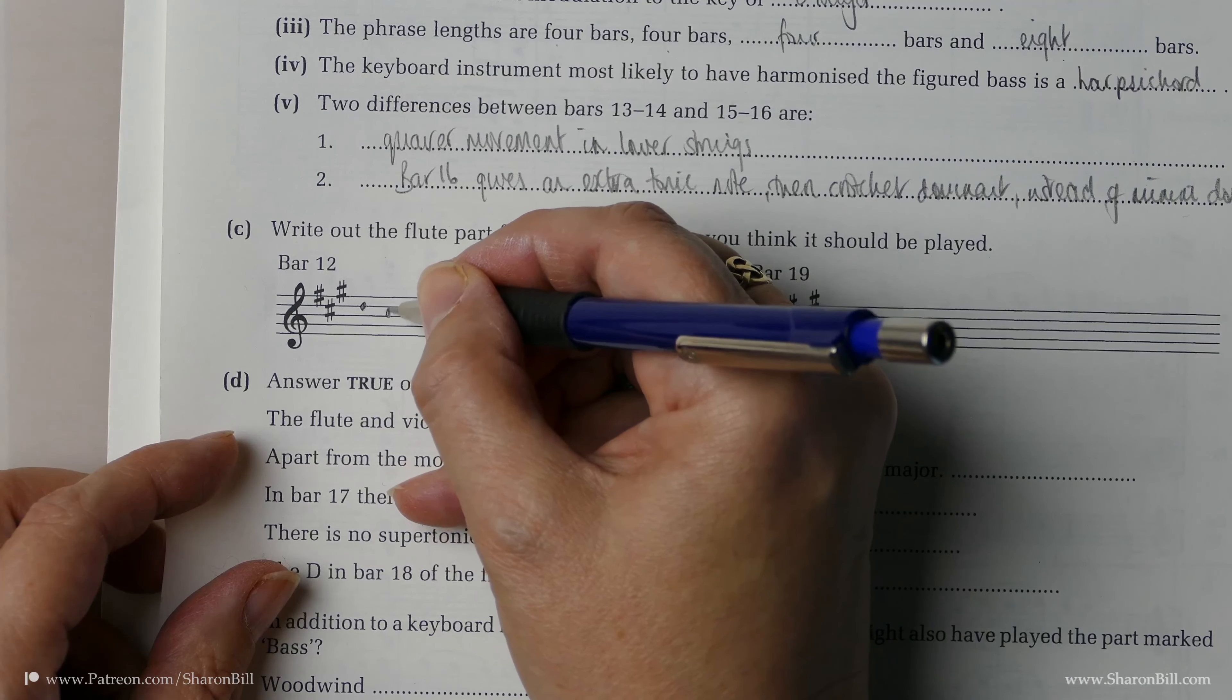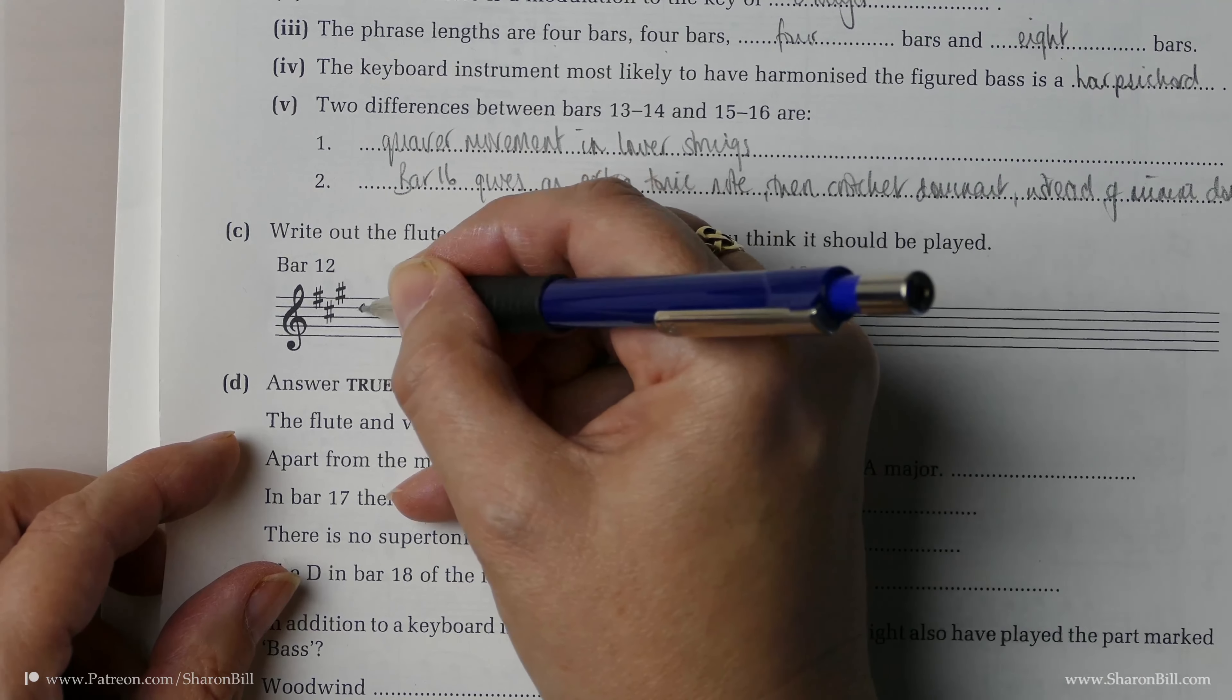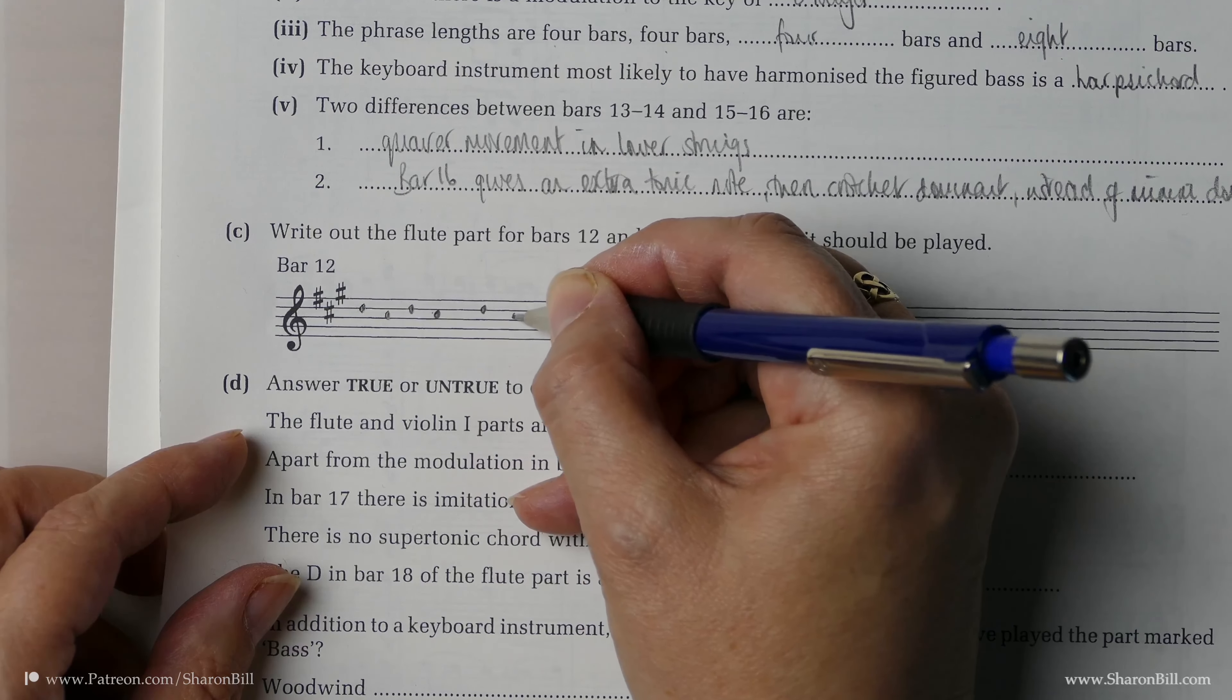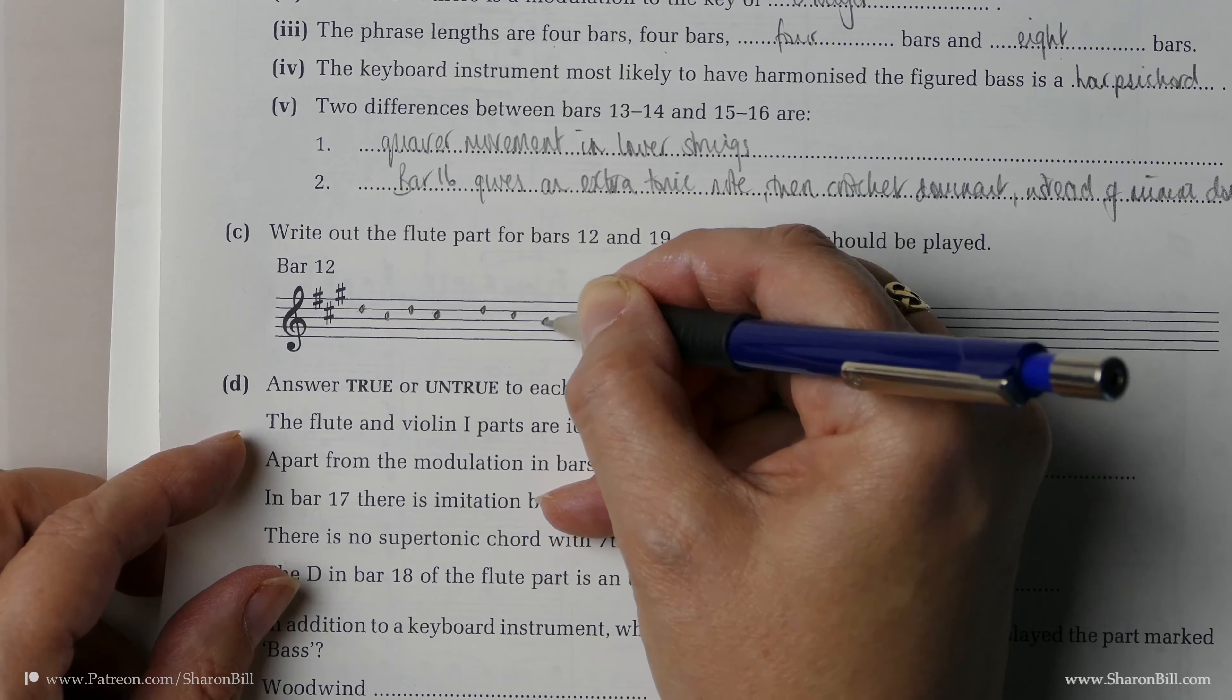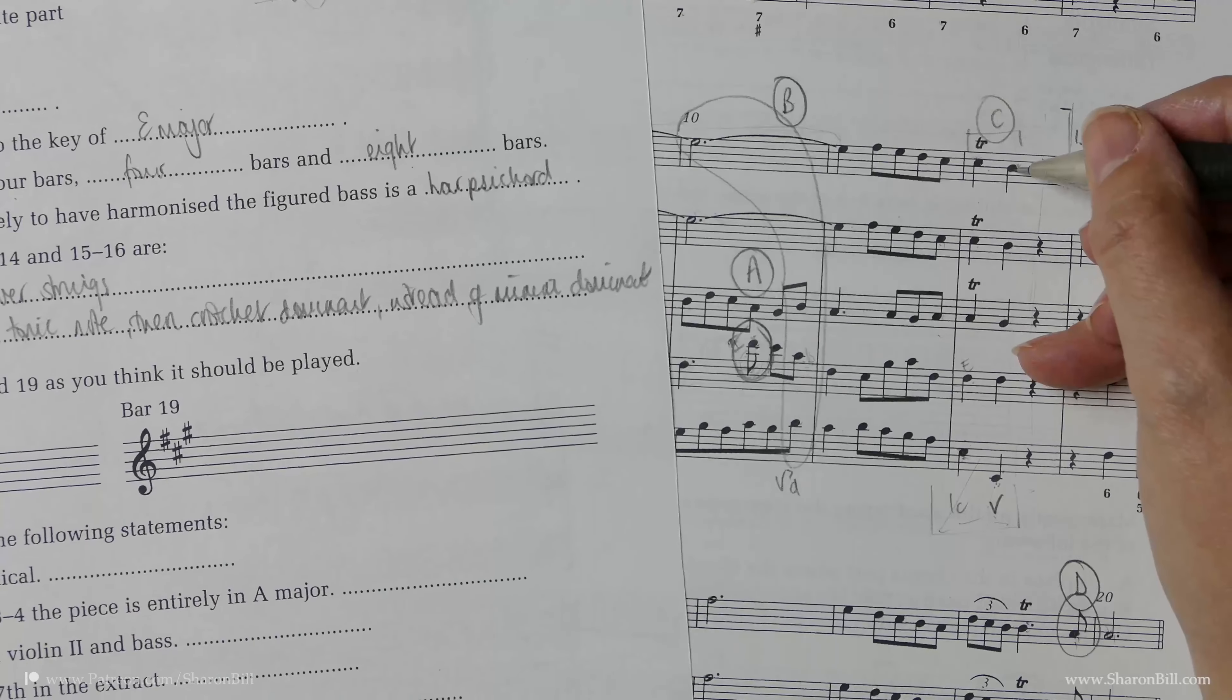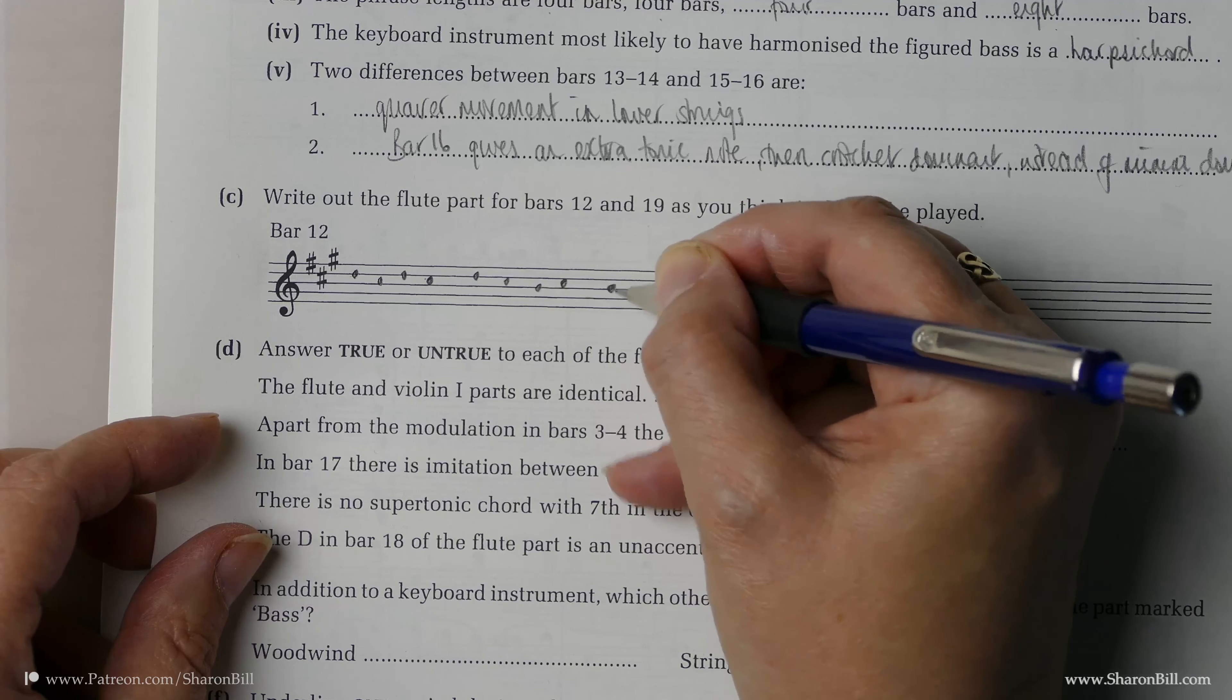So we've begun on the upper note. And I think if we go back to the D, we can finish with a turn, because then that will nicely fall onto the B by step, which is unchanged.